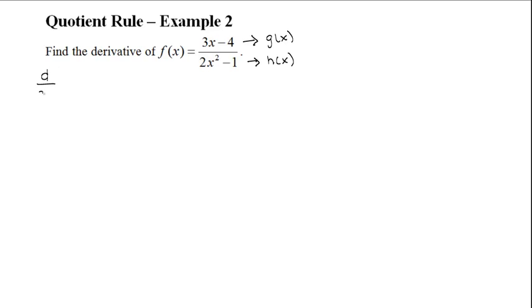A reminder of the quotient rule formula: when you take the derivative of one function over another function, you take the derivative of the top function and multiply it by the bottom function,